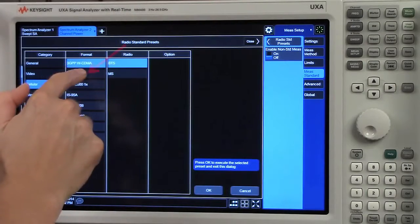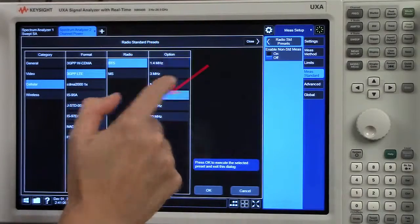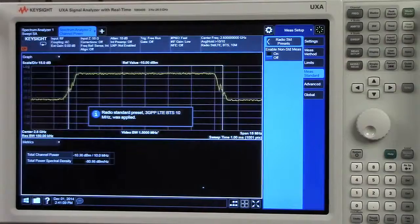We're doing cellular, 3GPP LTE, base station test, and 10 MHz. And then I'll select OK.